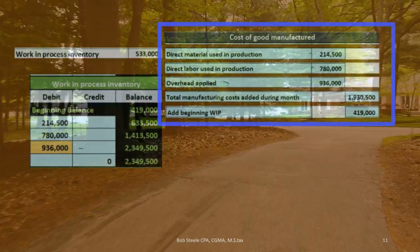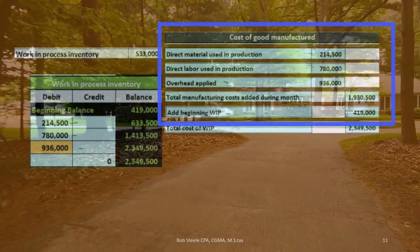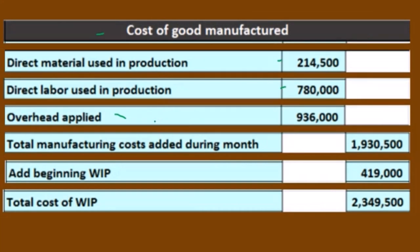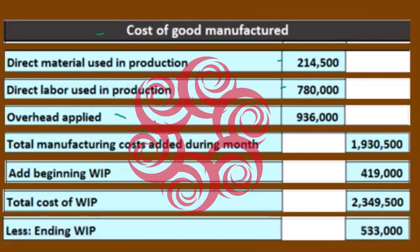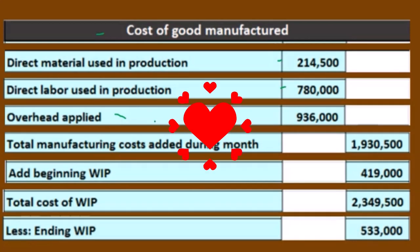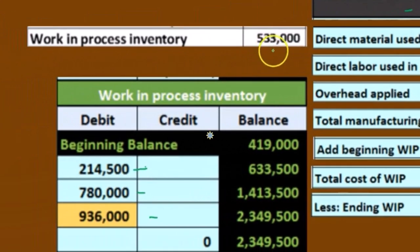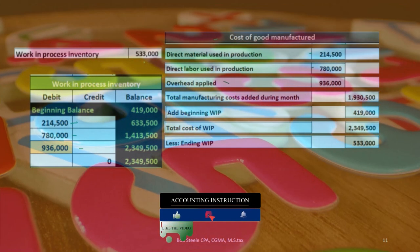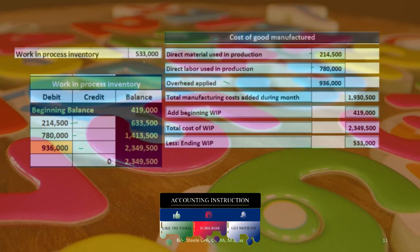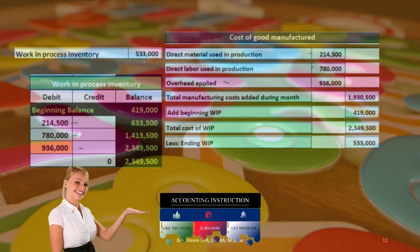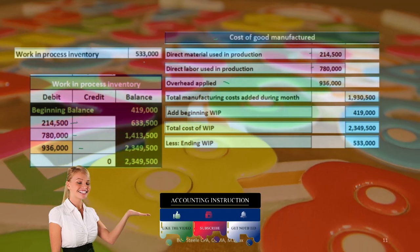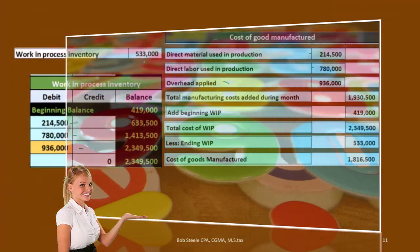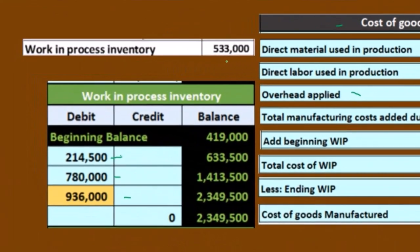We add the beginning work in process to the manufacturing costs added during the month, bringing us to a total cost in work in process of $2,349,500. Then we subtract the ending work in process of $533,000 — we'll discuss equivalent units and how that number is derived later. That gives us the cost of goods manufactured, which functions like purchases in the cost of goods sold formula.